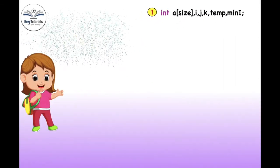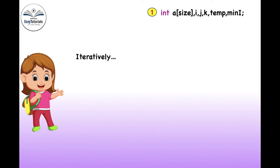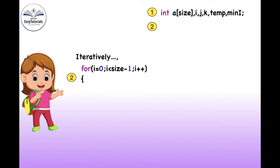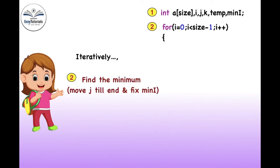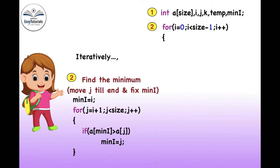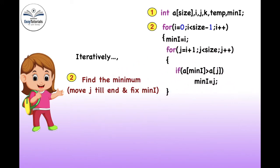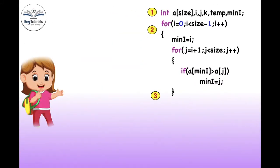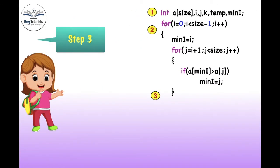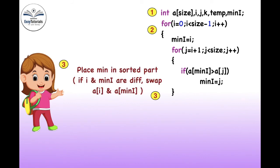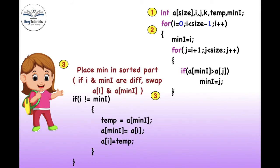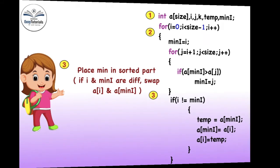Step 2 continued: for performing iteration we use `for i = 0; i < size - 1; i++`. In the loop we find the minimum value. Step 3: place the found minimum value in the sorted part, i.e., position I. We make a swap if I and min index are different.